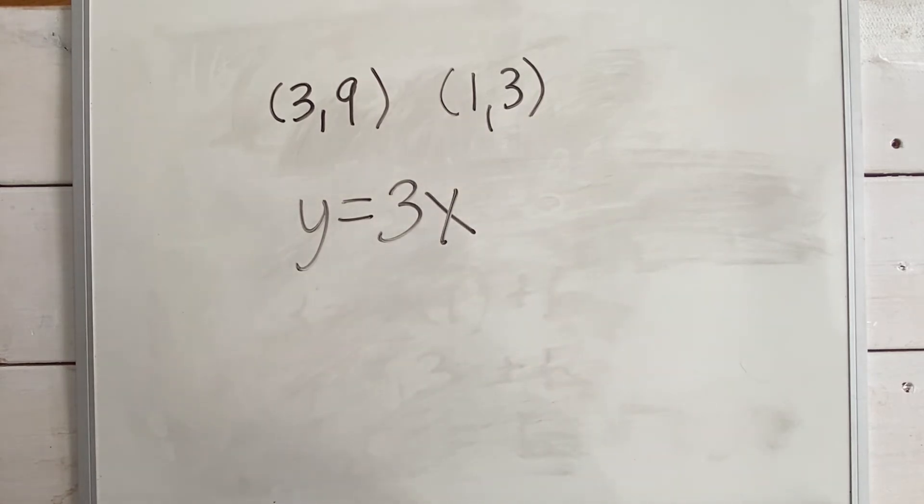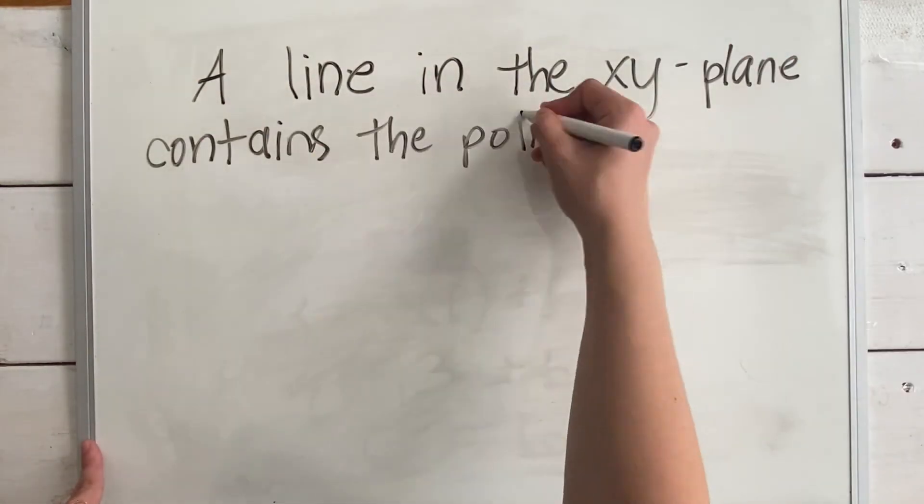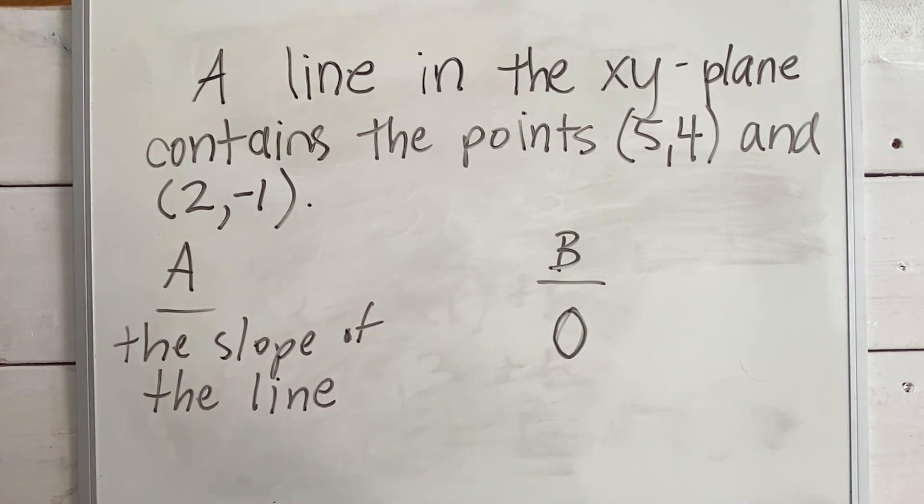Now we'll take a look at a GRE quantitative comparison example problem. Here's our problem. A line in the xy plane contains the points (5,4) and (2,-1). That's our intro information. And then we have our quantity a, the slope of the line, and our quantity b is zero.